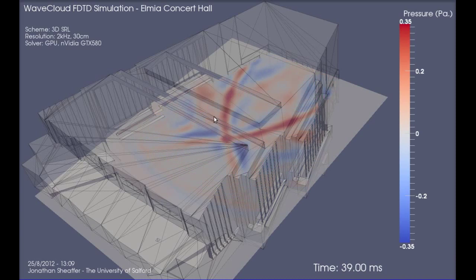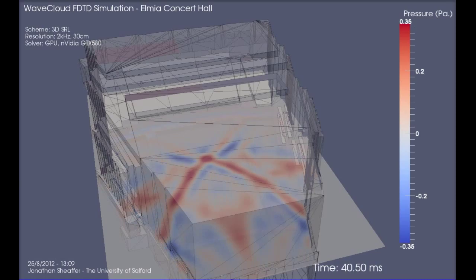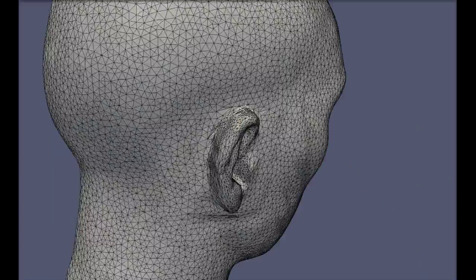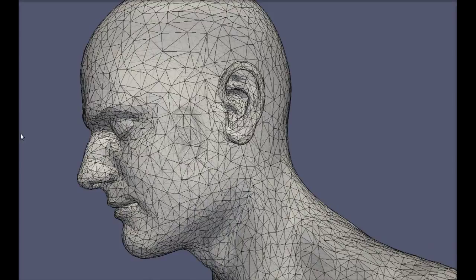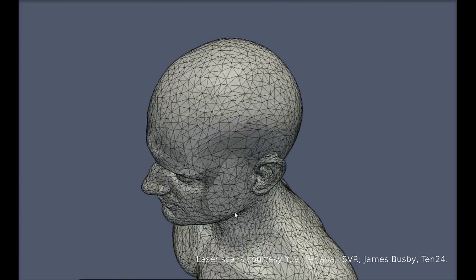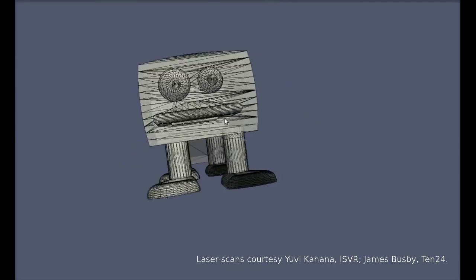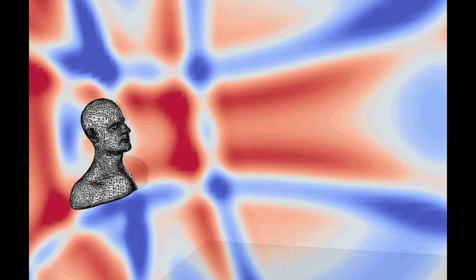The perceptual stage of the model requires binaural impulse responses to work with. So to achieve this, we embed in the model laser scans of human subjects. And these can be based on standard mannequins such as KEMAR, your own head, or any other arbitrary shape, even Perry the Platypus. Since the listener geometry is part of the grid, the corresponding HRTF is calculated using the same FDTD algorithm as used for the room.